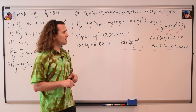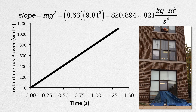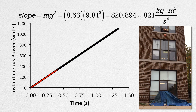The slope of the line ends up being 8.53 times 9.81 squared, which is approximately 821 kilograms times meters squared divided by seconds to the fourth power. The instantaneous power starts at zero watts and increases linearly to a value of roughly 1,100 watts at roughly 1.3 seconds right before the pumpkin strikes the ground. The rate at which energy is being delivered to the pumpkin by the force of gravity increases linearly as a function of time.